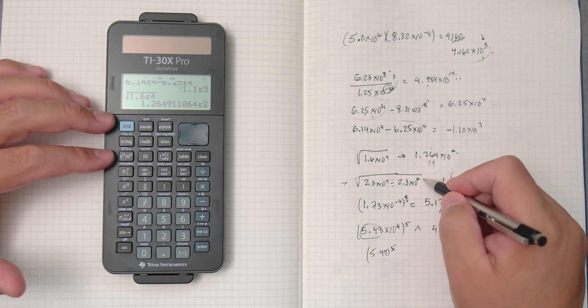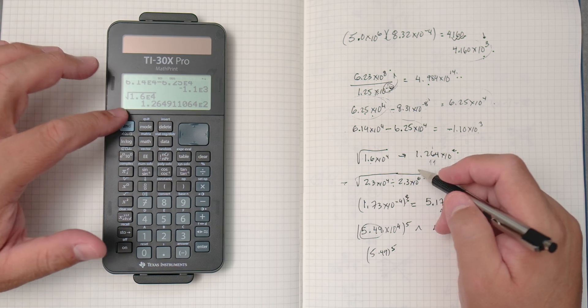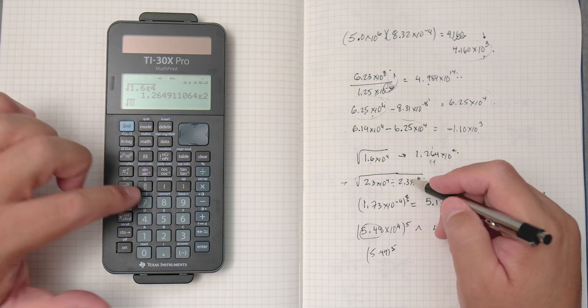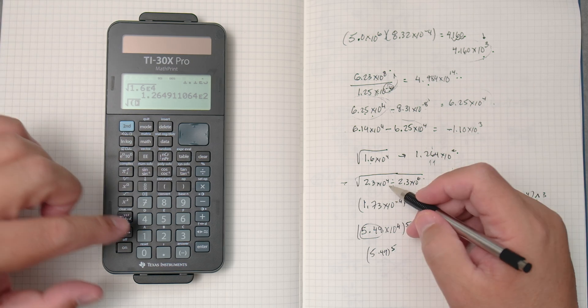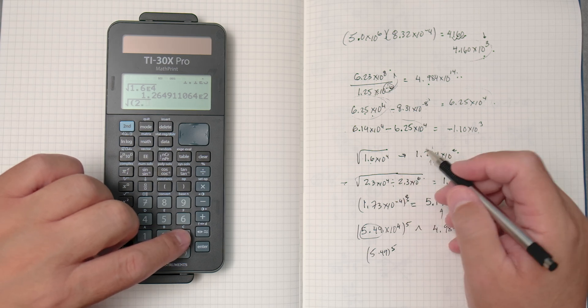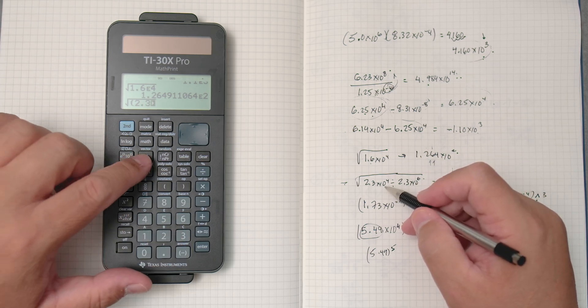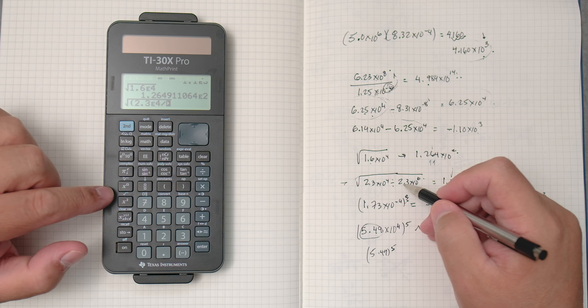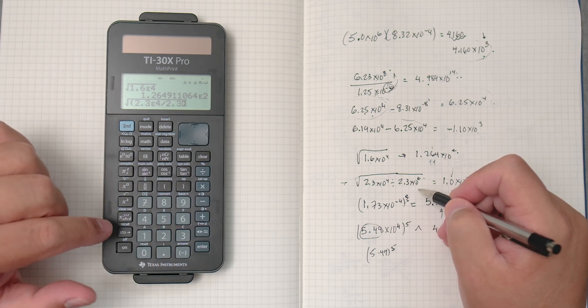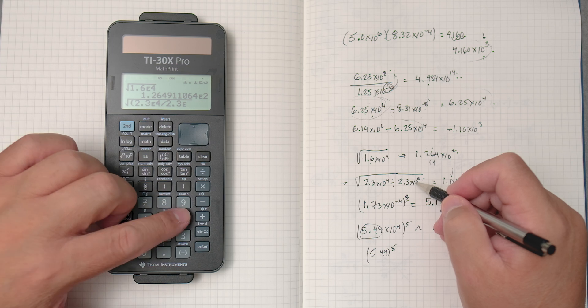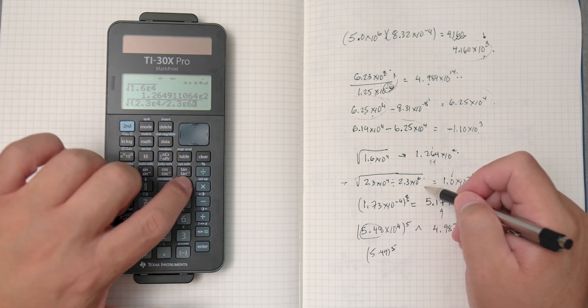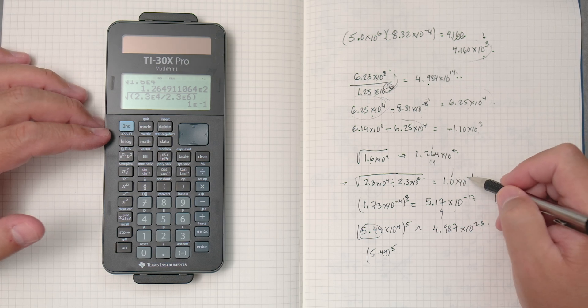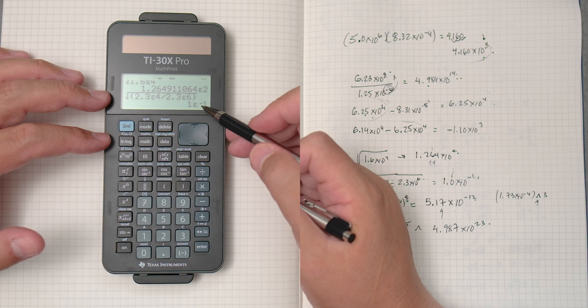Then we're going to do a little more complicated division. So, we say second x squared to get the square root. I would put parentheses to tell the calculator, hey, this is all inside the bracket, the square root. 2.3 double e times 10, and then get the 4 divided by, and then 2.3 double e or times 10 to the sixth. And then close it. Close parentheses. Enter. 1.0 times 10 to the minus 1. Times 10 to the minus 1.